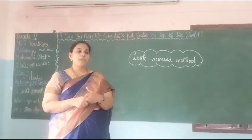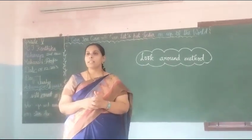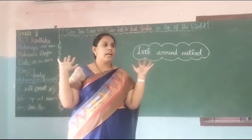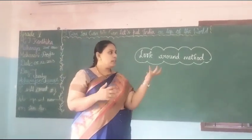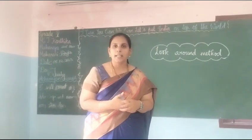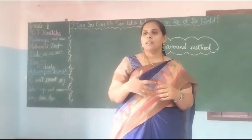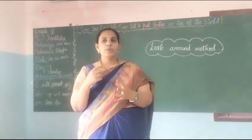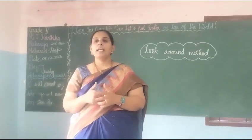Now we are going to apply these types of sentences. You are going to recap using the look around method. You are going to frame different types of sentences using the things placed around us — like the globe, cupboard, bench, ID card, student, children, chart, book, whatever things. Look around you and choose any one thing and apply the four types of sentences. We will all enjoy this look around method!